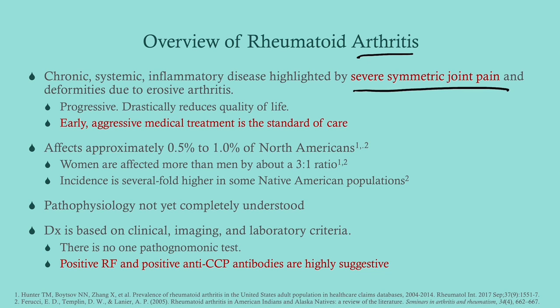Early aggressive medical treatment is the standard of care. Epidemiologically, RA affects up to 1% of North Americans, though the percentage varies by race and gender. Native American populations have a several-fold higher incidence, and women are more affected than men — true of most autoimmune disorders. The pathophysiology is not completely understood. Diagnosis is clinical, but labs help; there is no one pathognomonic test. Rheumatoid factor and anti-CCP are absolutely essential for nailing down this diagnosis.